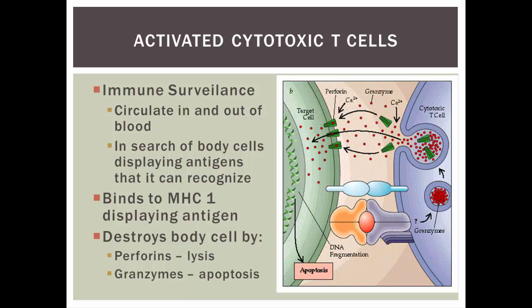The cytotoxic T-cell is in charge of immune surveillance. Like the natural killer cell, it circulates in and out of the blood searching for body cells that display red flags on their MHC class 1. If a cell has a virus infection, it displays a viral component on its MHC class 1, signaling that it needs to be destroyed. The cytotoxic T-cell binds via its T-cell receptor and CD8, triggering the release of perforins and granzymes — just like the natural killer cell. The perforins punch holes, the granzymes enter and cause apoptosis, and the infected cell is eliminated.